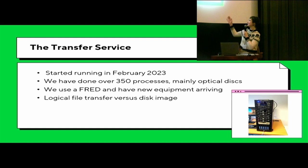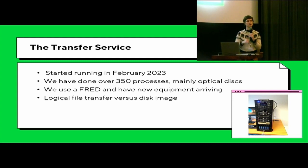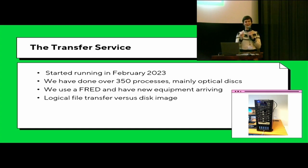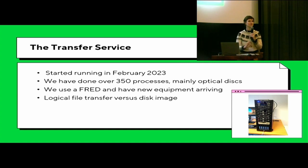We use a FRED — this is our FRED. It stands for Forensic Recovery Evidence Device. It came to the library on a previous project and we're really happy to have it. It also includes a five and a quarter inch floppy drive, which is really handy. Today in my presentation I will be mainly talking about the things that we do slightly differently than other institutions, because our main workflows and equipment are used across the community, so we won't be focusing on them in detail.